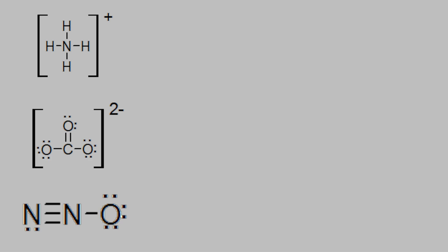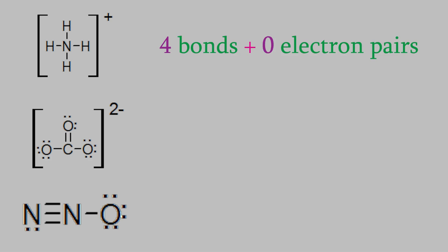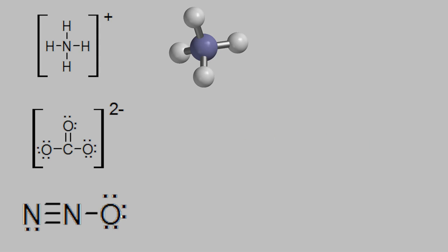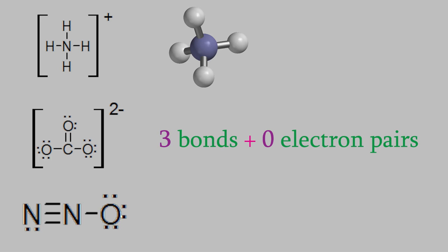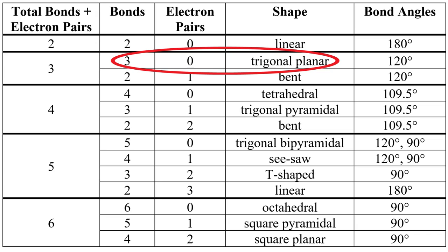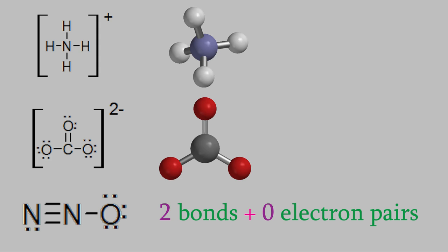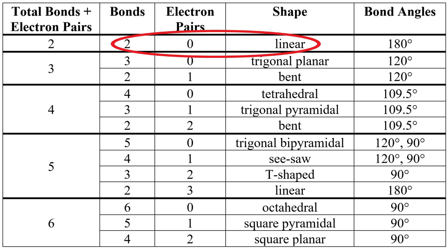For example, here are three molecules and ions that we saw when we were learning how to draw Lewis structures. In NH4+, the central atom has four bonds and no electron pairs. That means it has a tetrahedral shape, and all the bond angles are 109.5 degrees. Meanwhile, the carbonate ion has three bonds and no electron pairs on the central atom. That means the bond angles will be 120 degrees, and it has a trigonal planar shape. Finally, dinitrogen monoxide has two bonds and no electron pairs on the central nitrogen, so it's a linear molecule with a bond angle of 180 degrees.